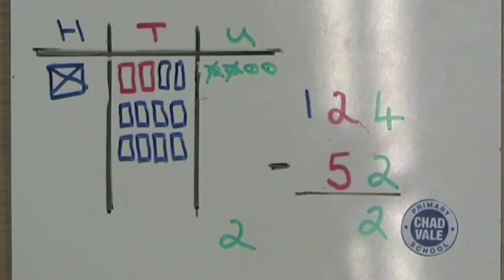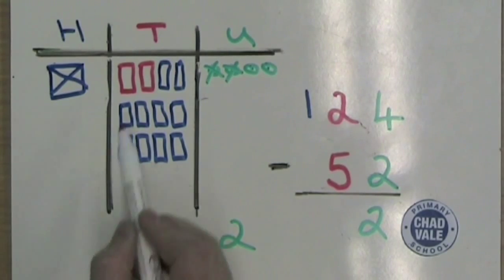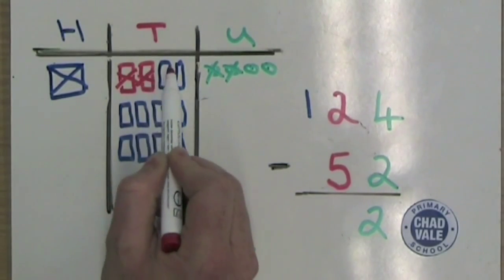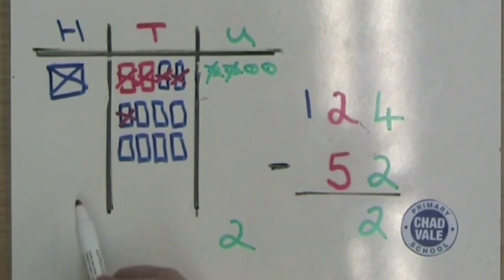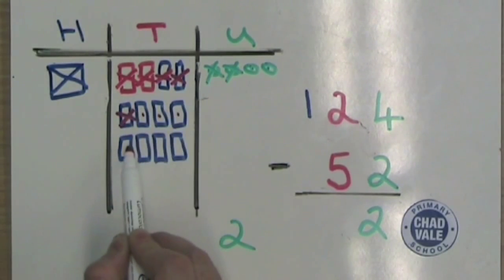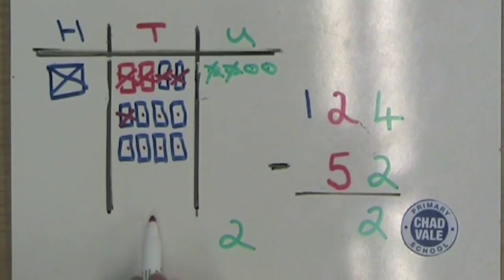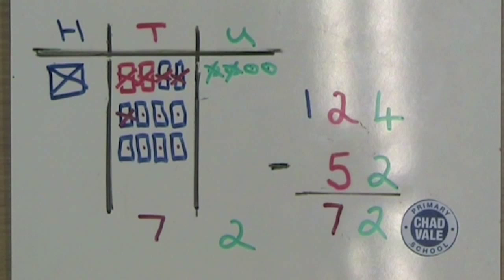We can now subtract five towers of 10: one, two, three, four, five. We count how many we've got left and write this in the tens column. We then count how many hundreds we've got left — in this case we have no hundreds, because we broke them up into towers of 10.